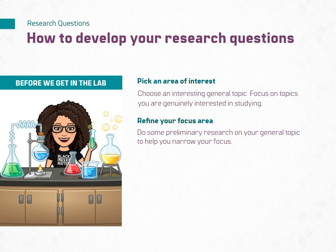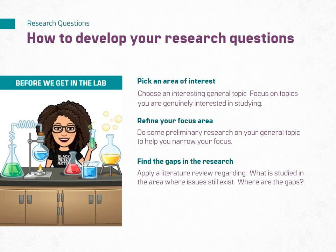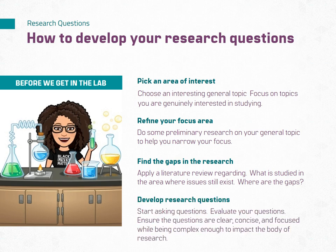Once your topic area is sufficiently narrowed, start doing a more in-depth analysis of the gaps in research. This is typically done through finding and reviewing peer-reviewed journal articles that discuss research in your topic area. You should analyze the assumptions made and review the future work section in the articles. Through the process of literature review, you can find the questions still left to be answered and focus your research on one of them.